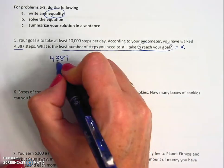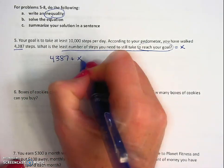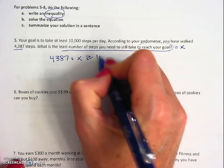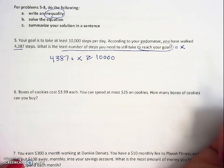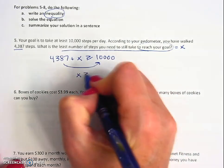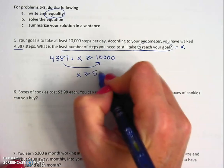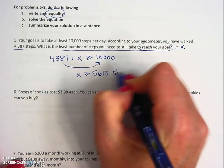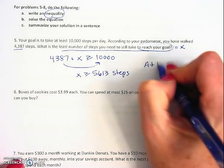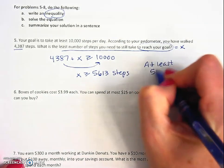So 4,387 I've already walked, plus however many I need left, needs to be greater than or equal to 10,000. So we just subtract that to both sides and we get 5,613 steps at least. We have to walk at least that many more.